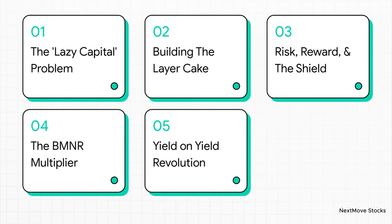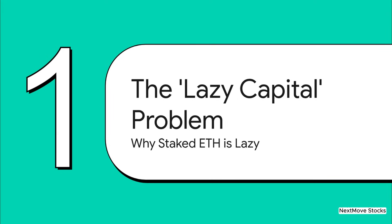Here's our game plan. First, we're going to look at what's called the lazy capital problem — it's the whole reason restaking even exists. Then we'll build our layer cake of yield piece by piece. After that, we have to talk about the risks involved. And finally, we'll see how this could translate into a massive multiplier effect for a company like BMNR and why this is truly a revolution for generating yield.